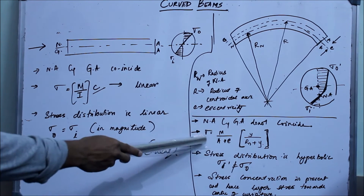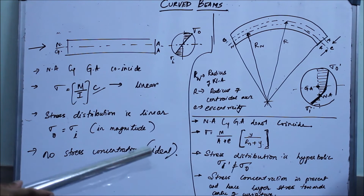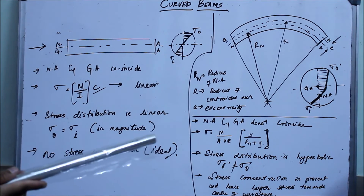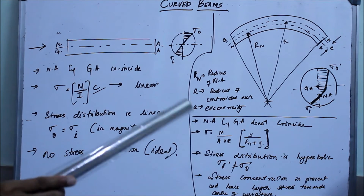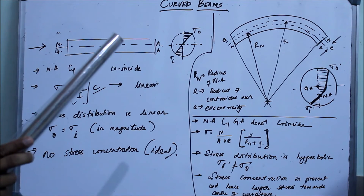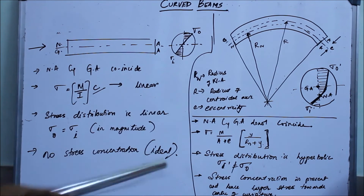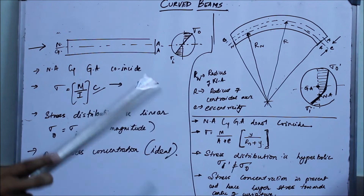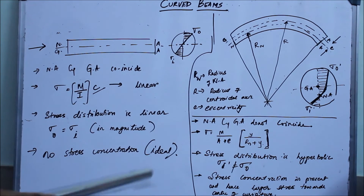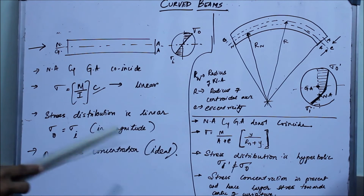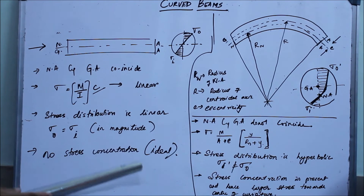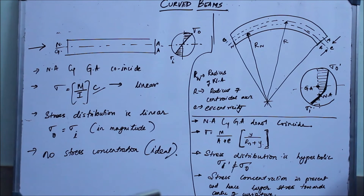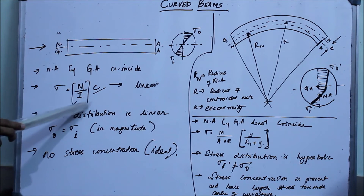The bending stress for curved beams is given by the formula: σ = M / (A × e) × Y / (R_n + Y), where A is the area of cross-section, e is the eccentricity, R_n is the radius of the neutral axis, and Y is the distance from the neutral axis. Since there are two values of Y — distance from the neutral axis to the outermost fiber and to the innermost fiber — we need to handle them separately. I will derive this equation in my next video.